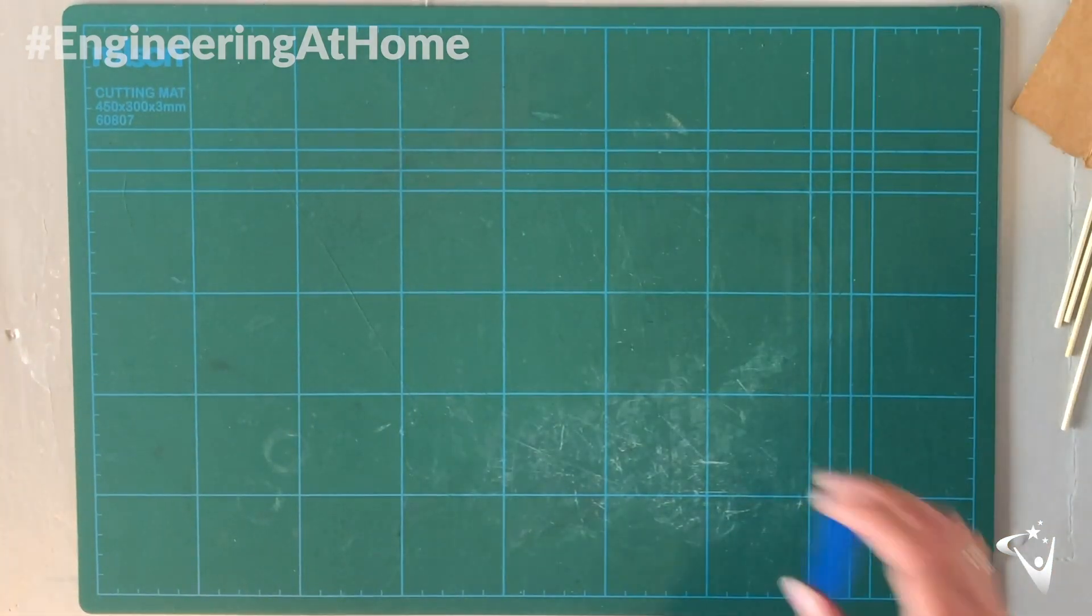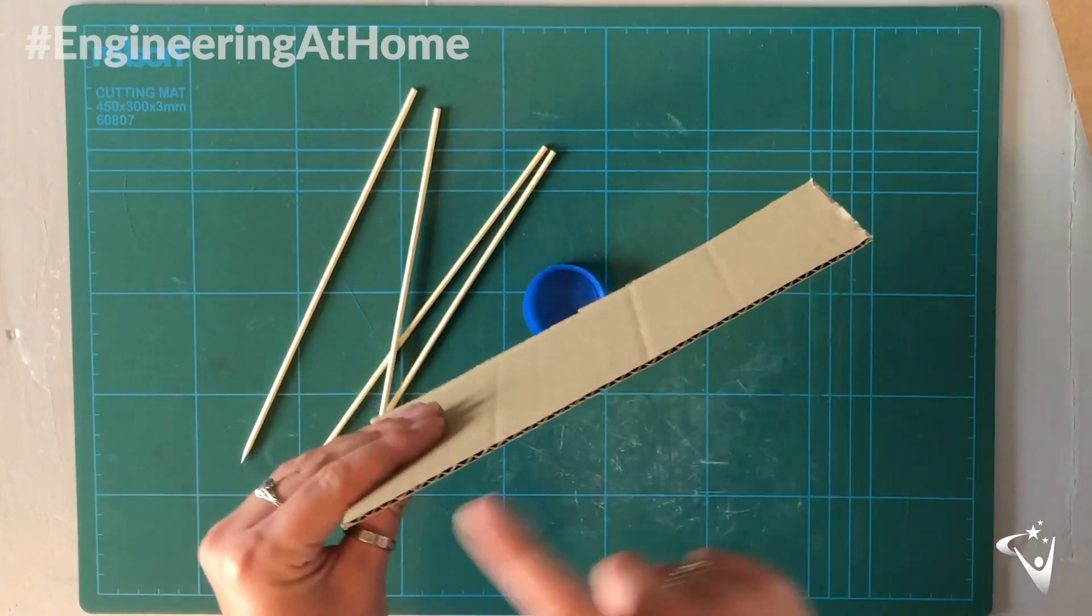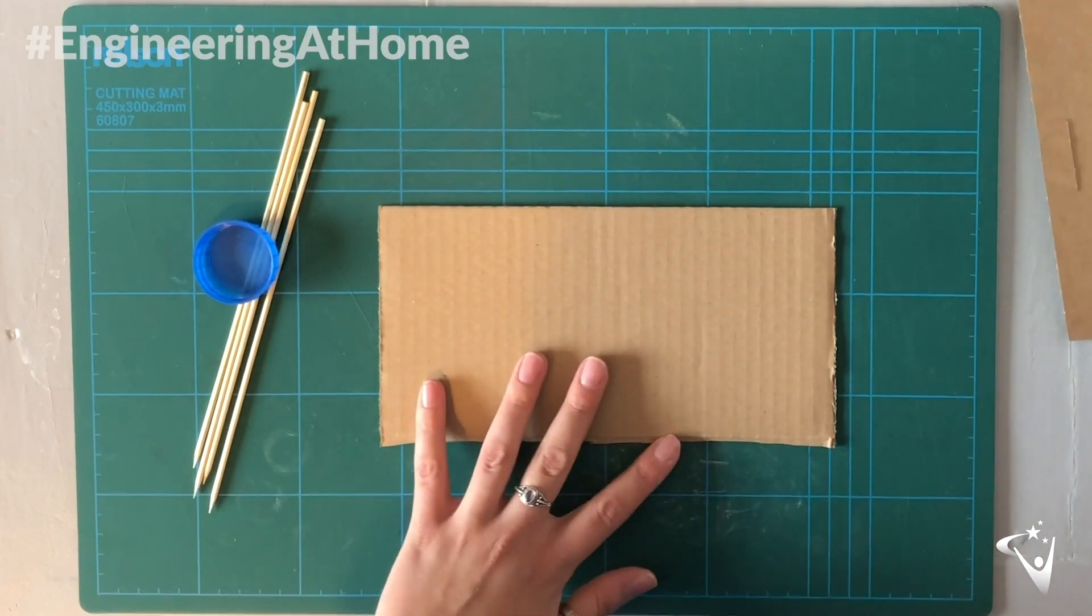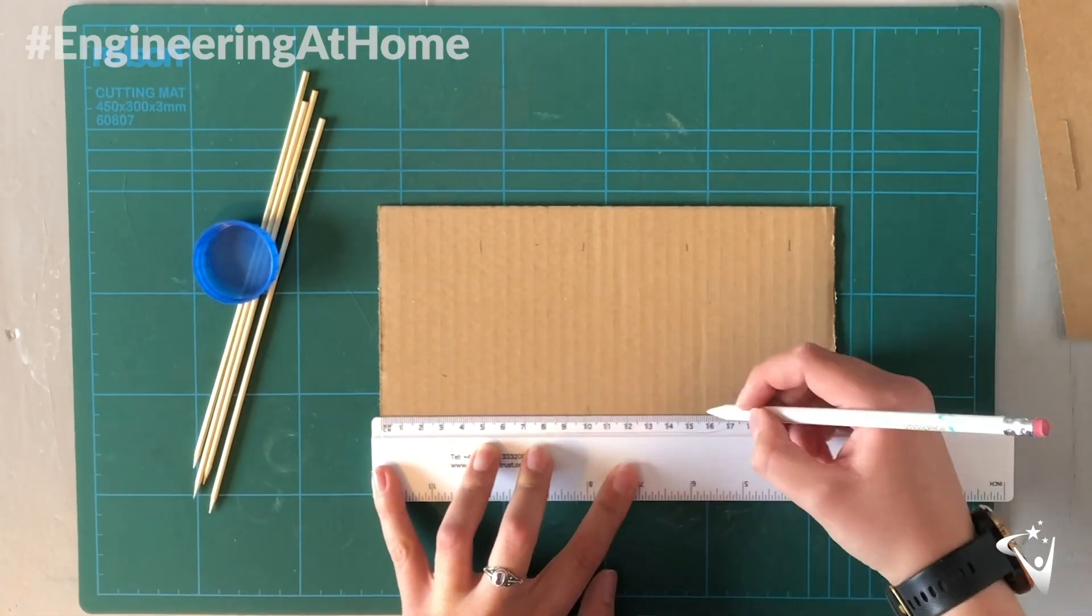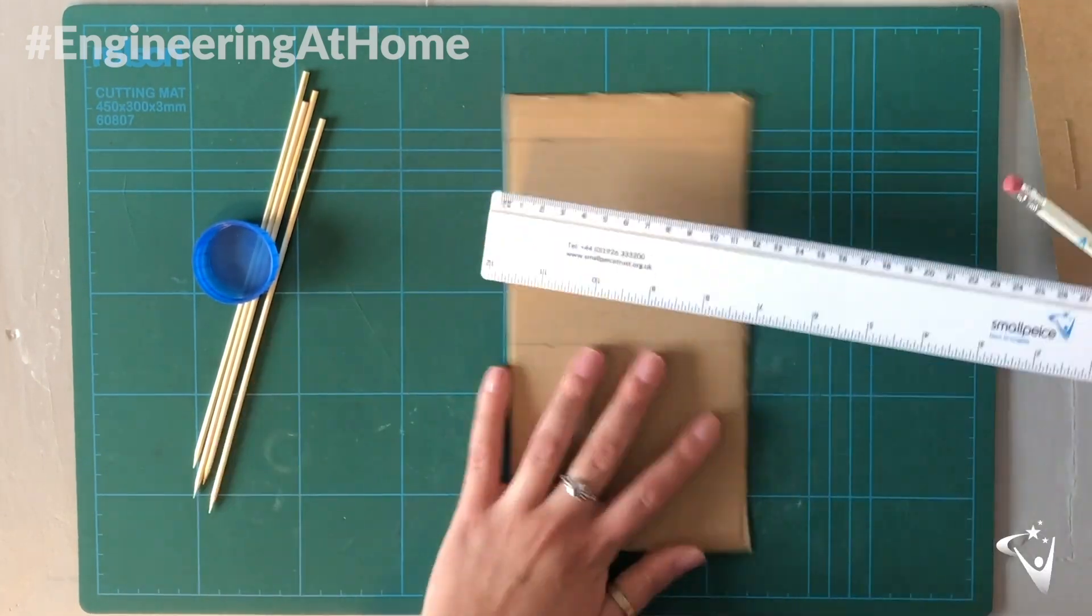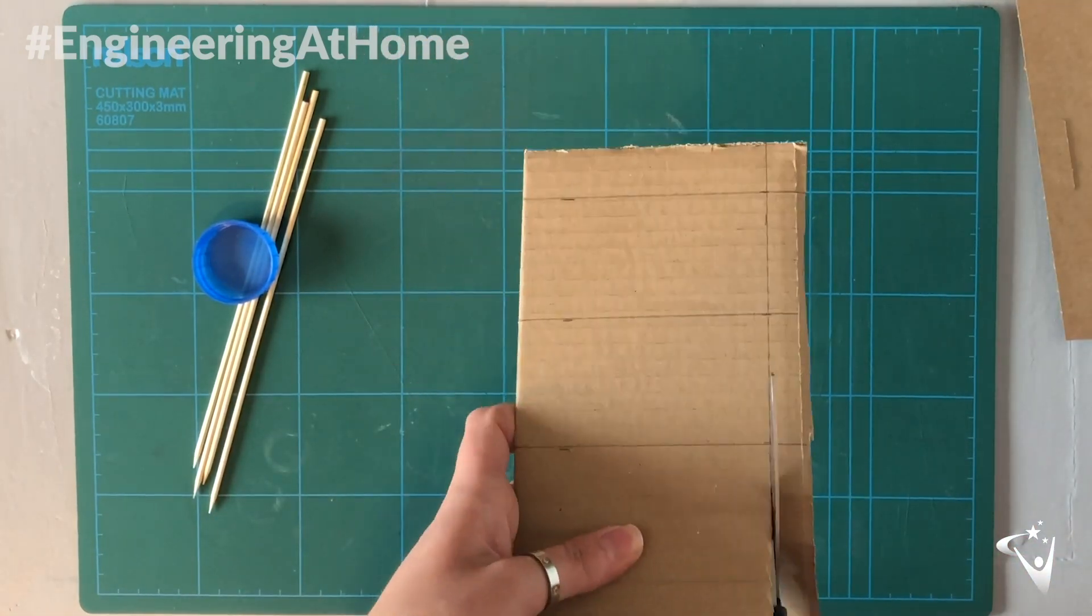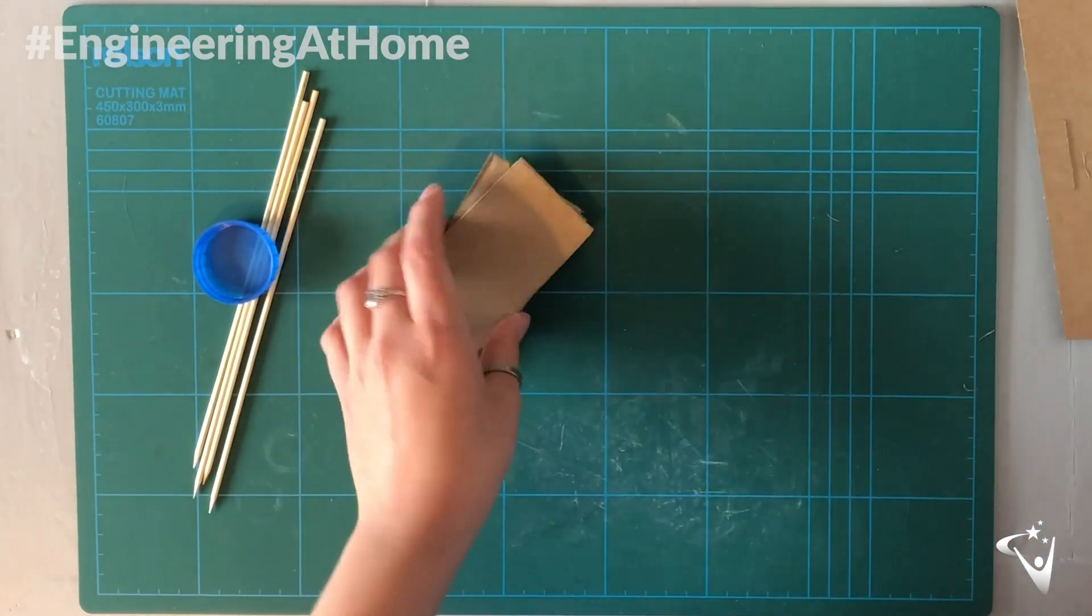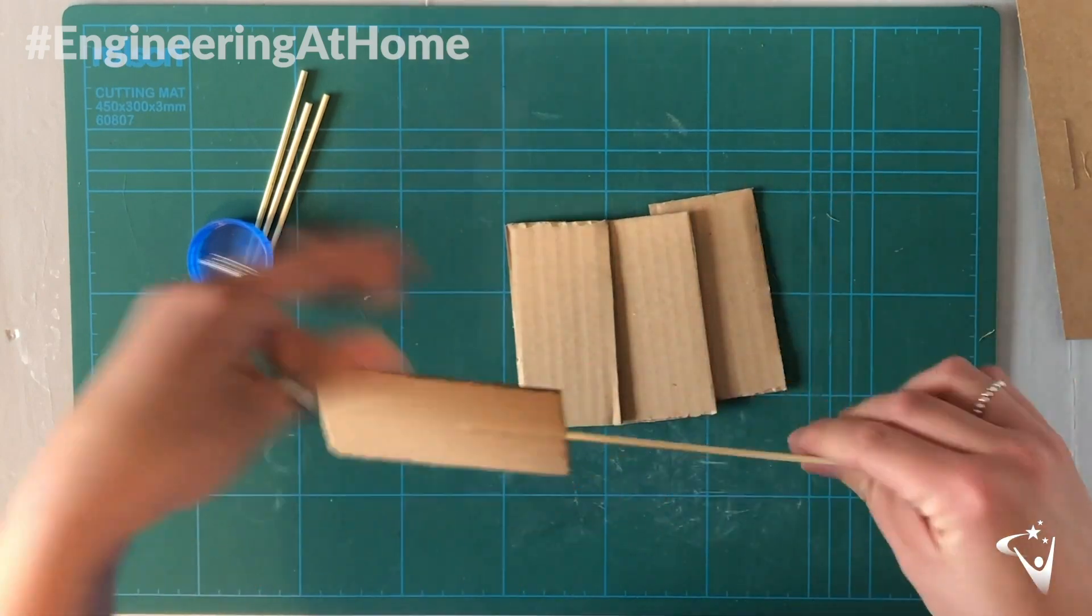Now we're going to make the wind turbine. You'll need the milk bottle lids, some more skewers and some corrugated card. Make sure you're using corrugated card instead of regular card. We're going to cut our wind turbine blades out of the corrugated cardboard. We want these to be completely identical so use a ruler to make sure they're all the same size. Make sure the lines of the corrugated card go along the length of your blade so you can push the skewer in to attach them.